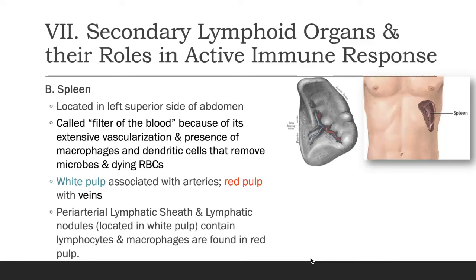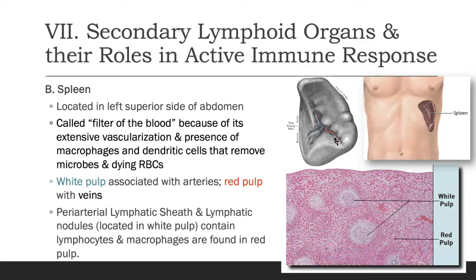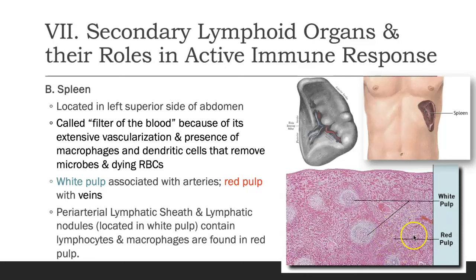Another secondary lymphoid organ is the spleen, found in the upper left quadrant of the abdomen. It filters the blood due to its extensive vascularization, and contains macrophages and dendritic cells that remove microbes and dying red blood cells — which only last about 120 days. In a histology view, the spleen has red pulp with lots of veins and white pulp associated with arteries. The periarterial lymphatic sheath and lymphatic nodules are in the white pulp and contain lymphocytes, while macrophages are in the red pulp.